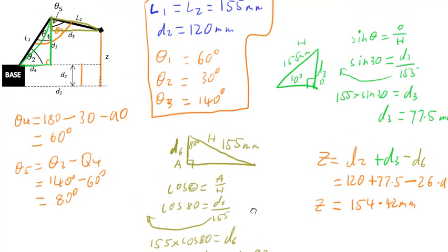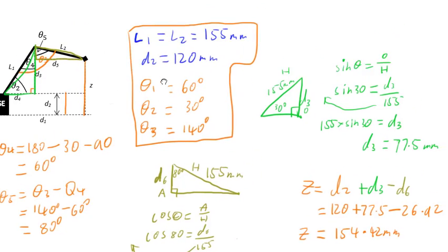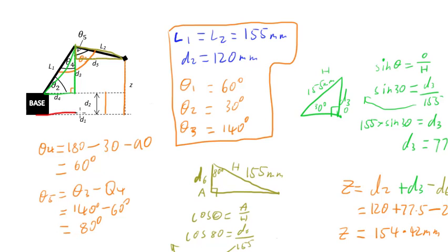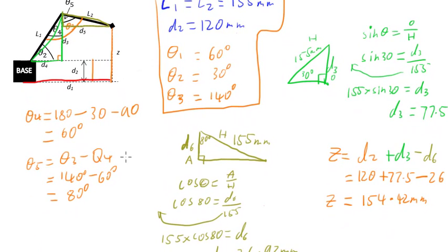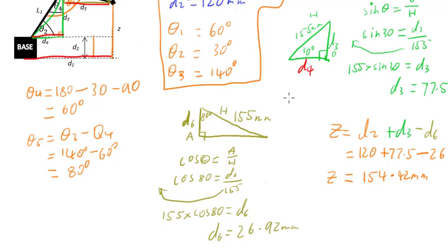So now we have worked out how tall the tool tip is above the ground. All we need to do now is work out x and y. To work out x and y, we need to know how far the tool tip has ended up from the base — what I called d1 earlier — which is this distance of the tool tip from the base. We want to do a very similar thing to what we did to find z, but instead of looking at the height of our triangles, we want to find the width — d4 and d5 — because putting those two lengths together will give us d1. So I'm going to do the calculation for d4 first.